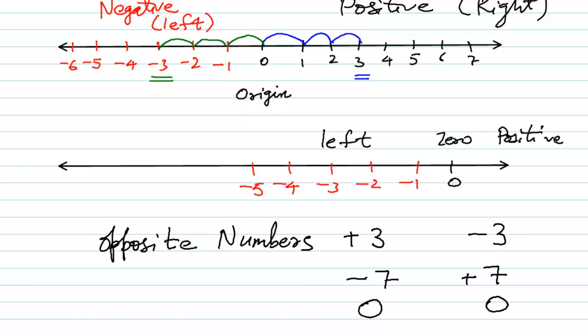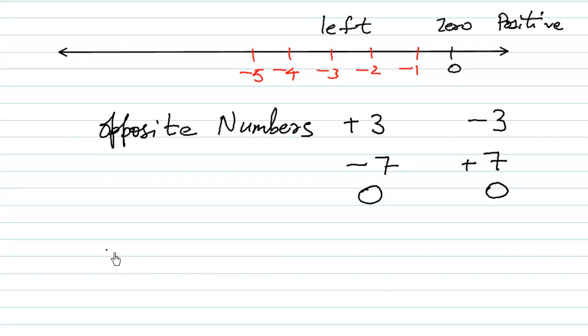Remember, 0 is neither positive nor negative. If you add two opposite numbers, you get a 0.